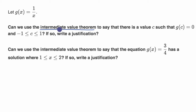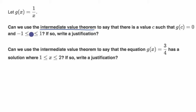In order to even use the intermediate value theorem, you have to be continuous over the interval that you care about. This interval is from x equals negative one to one, and one over x is not continuous over that interval — it is not defined when x is equal to zero.